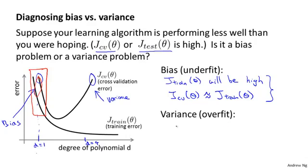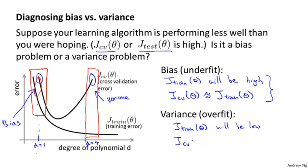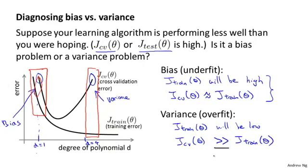In contrast, if your algorithm is suffering from high variance, we'll notice that J_train — the training error — is going to be low; you're fitting the training set very well. Whereas your cross-validation error will be much bigger than your training set error — denoted by the double greater-than sign, meaning much greater than. So if you see this combination of values, that's a clue that your learning algorithm may be suffering from high variance and might be overfitting.